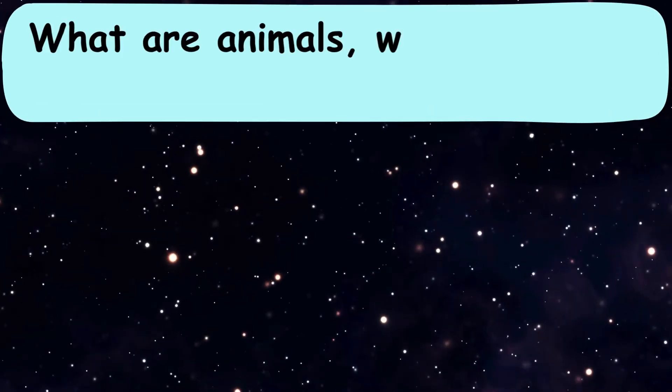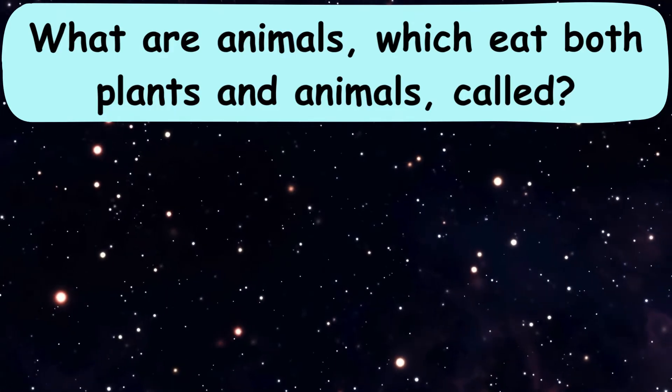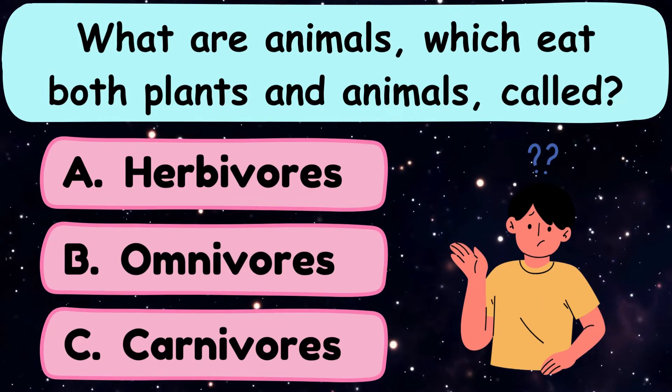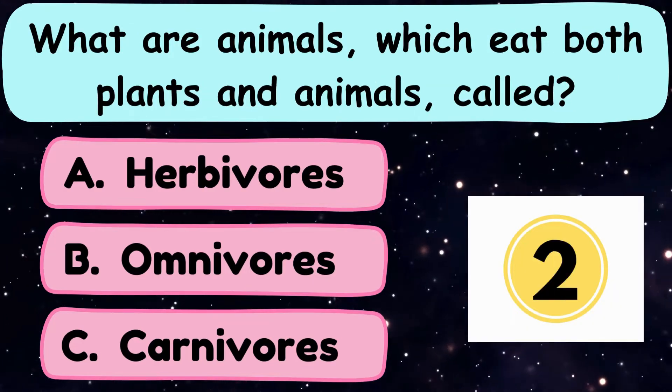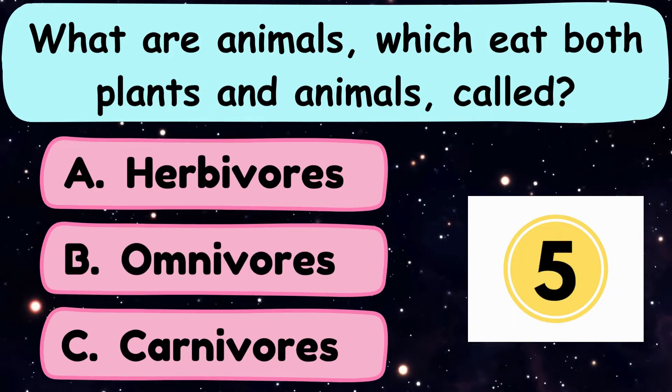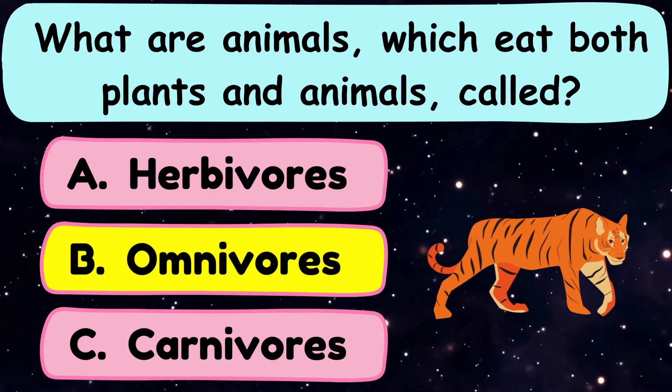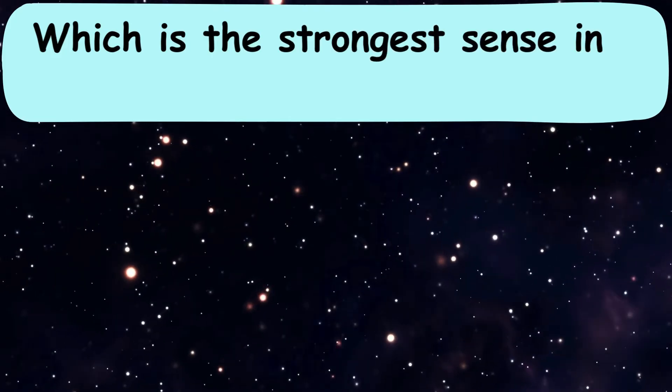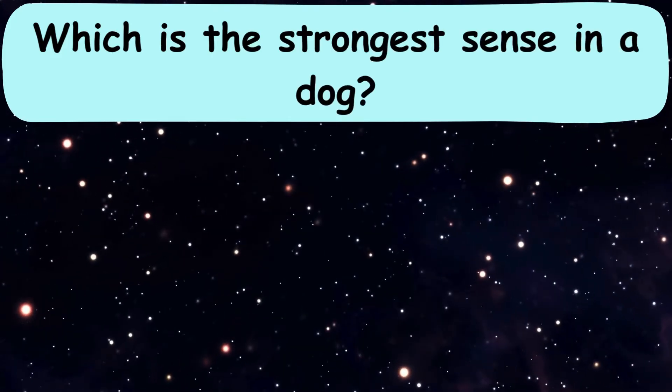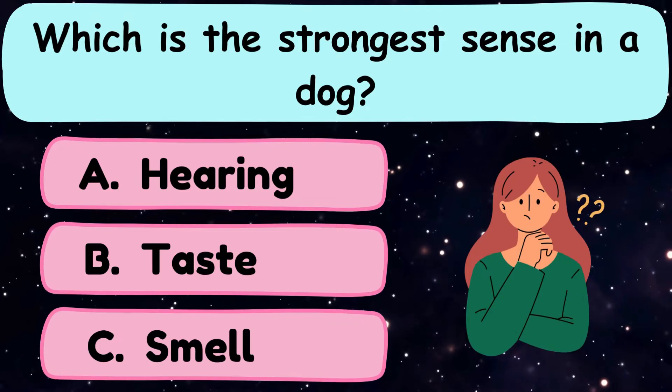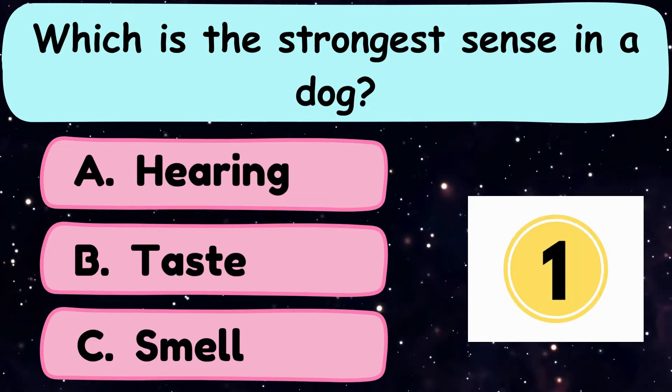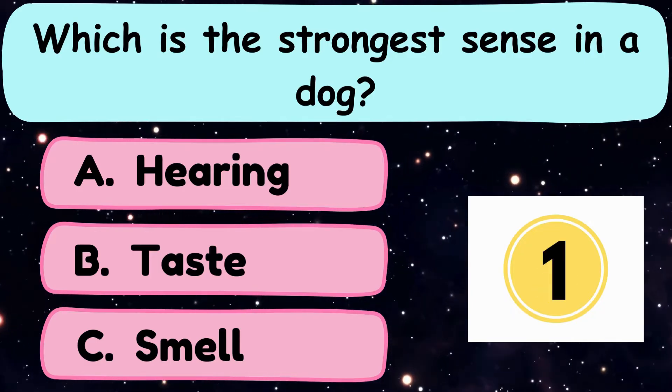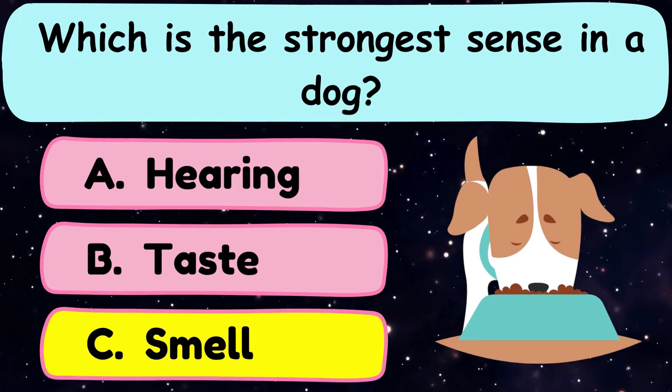Question number 16. What are animals which eat both plants and animals called? A. Herbivorous, B. Omnivorous, or C. Carnivorous? Question number 16. Which is the strongest sense in a dog? A. Hearing, B. Taste, or C. Smell? And the correct answer is option C. Smell.